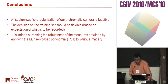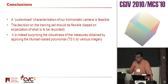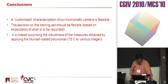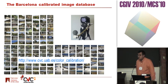Basically, my conclusions are that customized characterization of the camera is feasible. You need a training set, which is flexible — you need an expectation of what you want to record. The Munsell-based polynomial is quite robust and quite good, and this is the default one that we have in our dataset in Barcelona. Thank you very much.